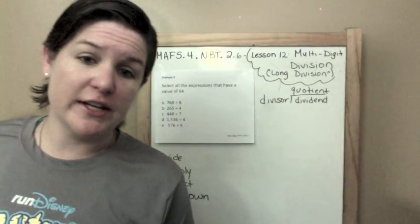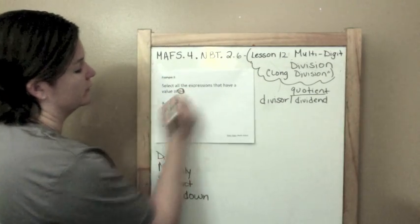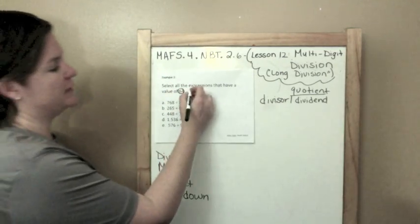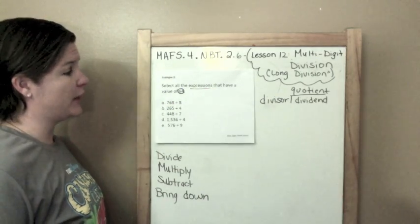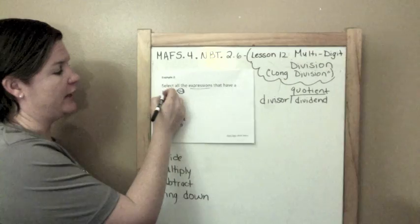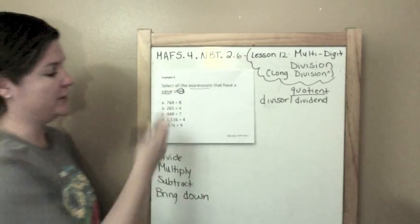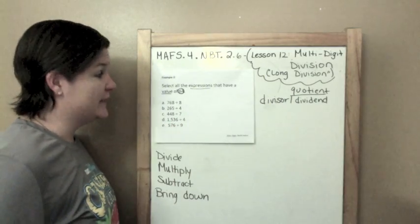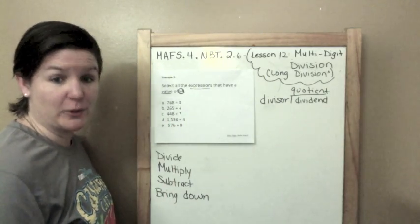Next: Select all the expressions that have a value of 64. Expressions means that we have an operation to do but we do not have an equal sign. Finding the value is just finding the number that equals 64. So I'm gonna work all these out, see which one equals 64. I gotta move fast because I got 5 to do.